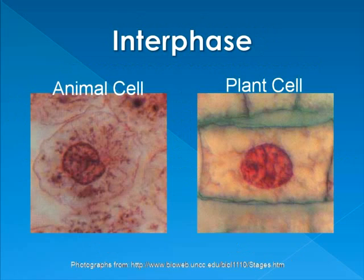Here is a photograph of an animal cell and a plant cell in interphase. Not a lot goes on in interphase. In the G1 phase you have the normal metabolic reactions of life, but then you have the synthesis of chromosomes, so the nucleus gets a little denser — and that's what we can see happening here.